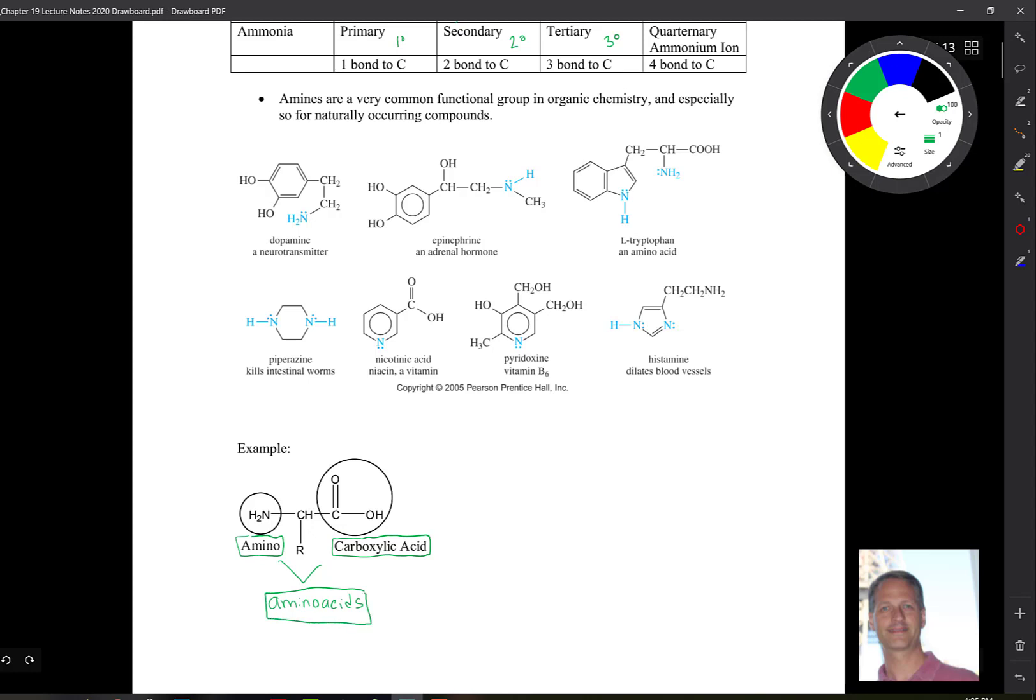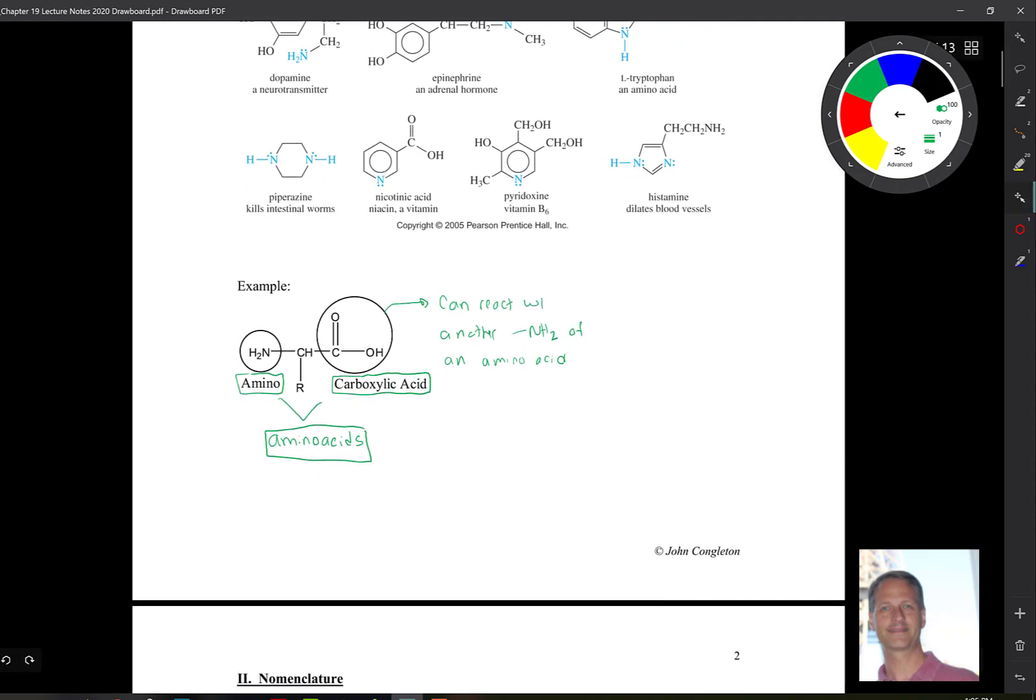Now it turns out that this part of the carboxylic acid can react with another NH2 of an amino acid. So they can link together. And when they do, you form a dipeptide. If it was just two, if it was three, it would be a tripeptide or a polypeptide. Many are linked together.